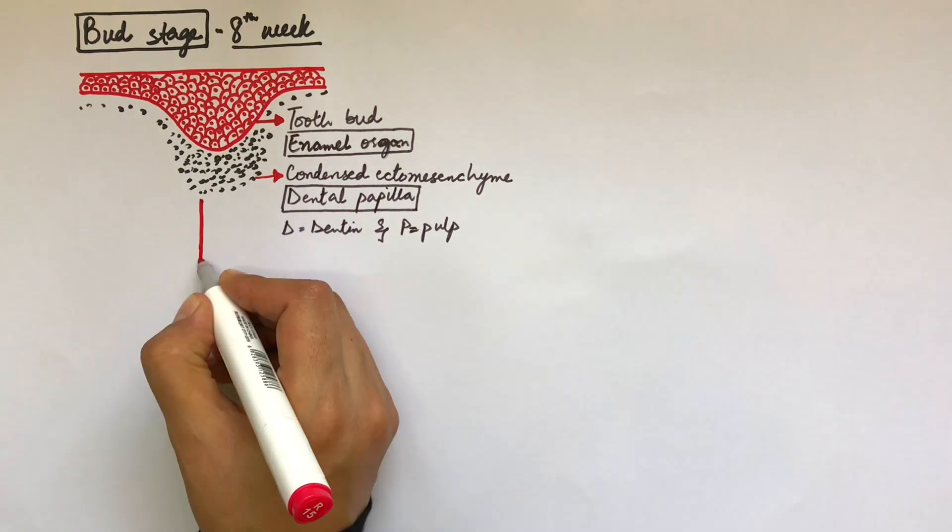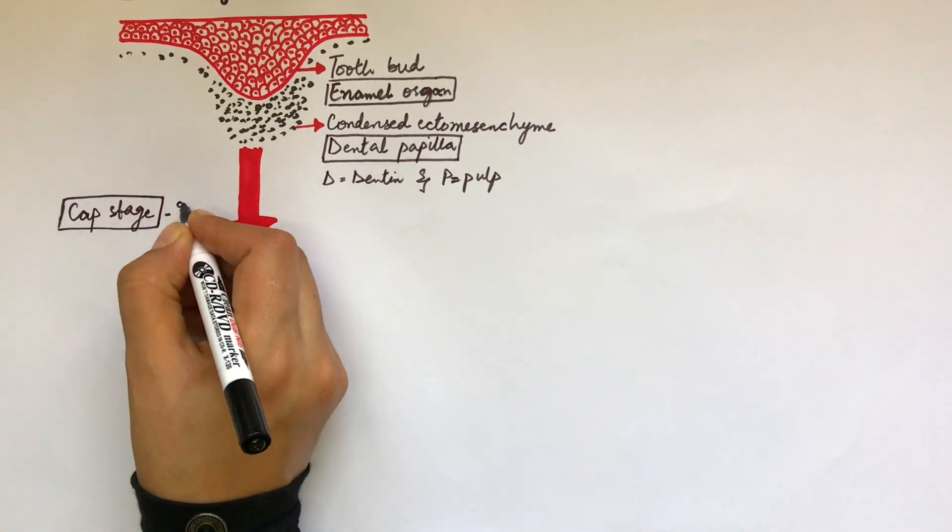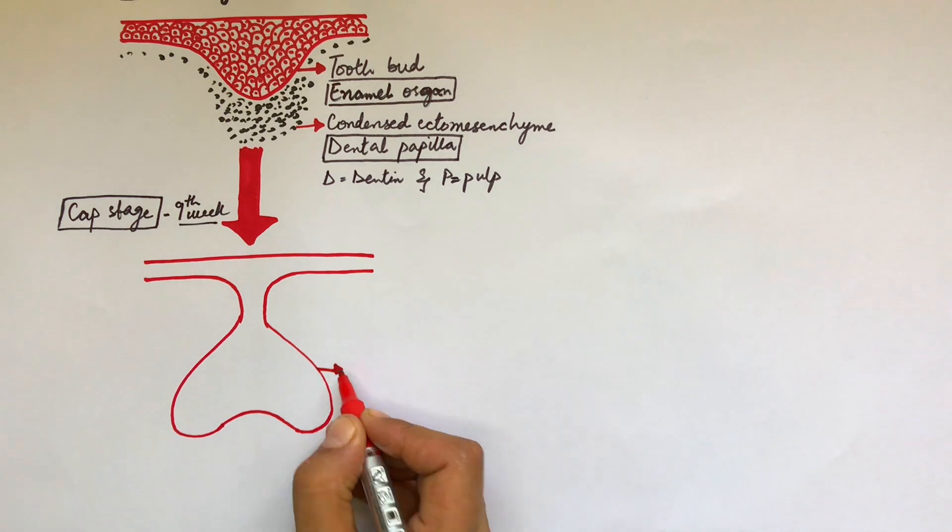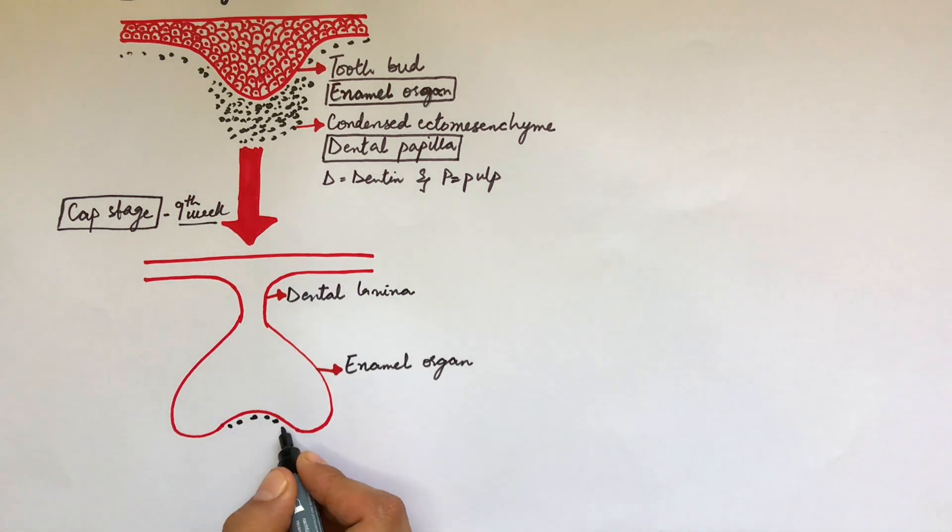As the developmental process enters into the cap stage, which starts at the ninth week, the enamel organ drags along with it part of the dental lamina and occupies the shape of a cap, sitting on the condensed wall of the dental papilla.